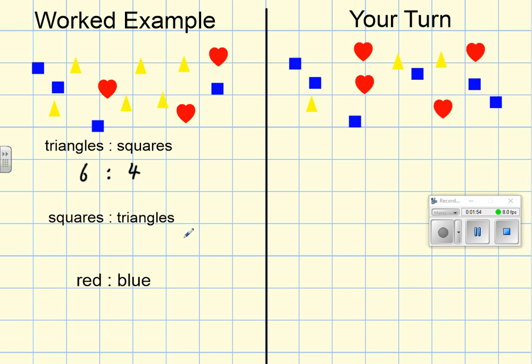Now the next bit asks us to find the ratio of squares to triangles. We don't need to count again because it's the same as this one here. We're going to flip it round, and I know I've got 4 squares. The ratio of squares to triangles is 4 to 6.